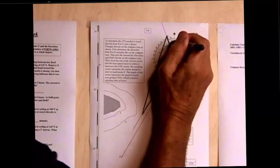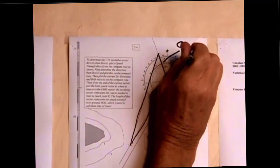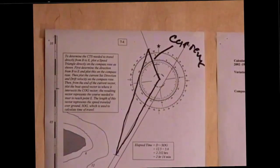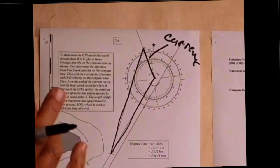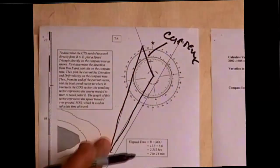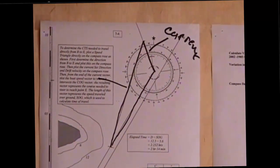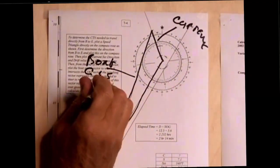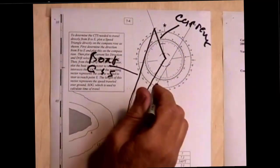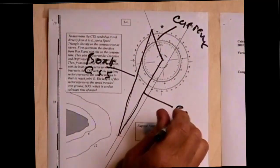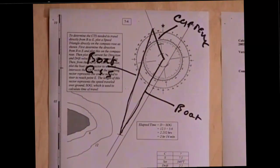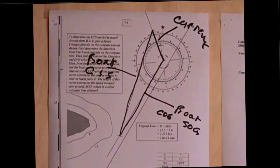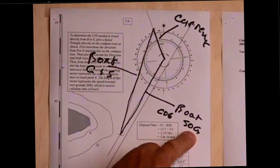This side of the triangle represents the current. The direction of it represents the current direction and the length of it represents the current speed. This side of the triangle represents the boat speed and direction through the water. So this is the boat course and speed through the water. And this side of the triangle represents the boat course over ground and speed over ground. And we call that COG and SOG.